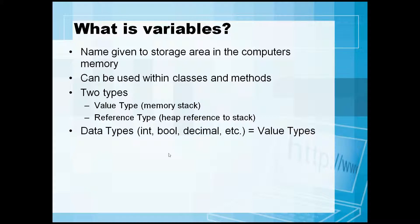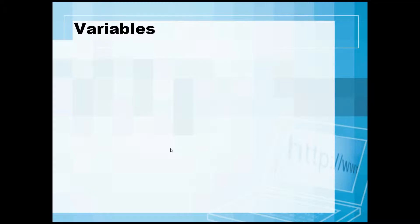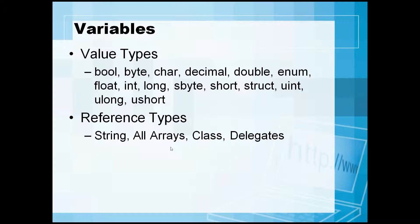For value type variables, the data types include int, boolean, decimal, double, etc. Reference types include things like classes, objects, strings, or delegates. Examples of value type variables are: boolean, byte, character, decimal, double, and more. Reference types include string, any type of array, a class, or a delegate. Now let's jump into the demo.